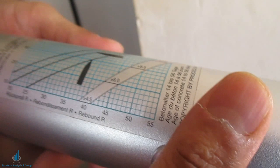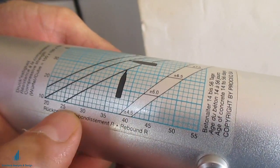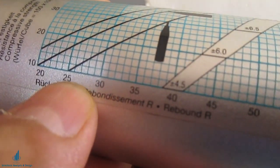For example, this rebound is having 26 rebound number. You can just refer here 25 to 30 in between.